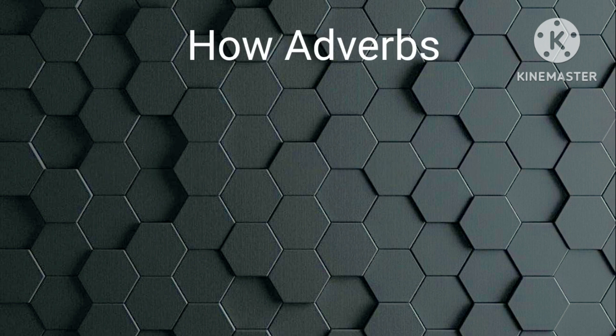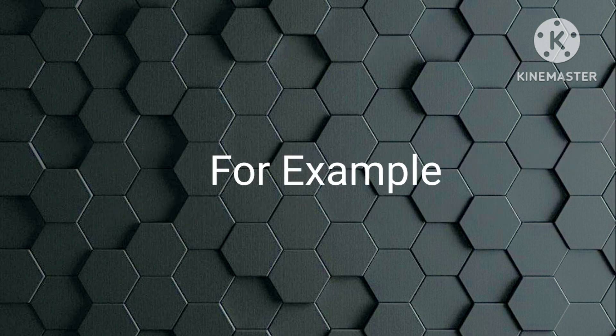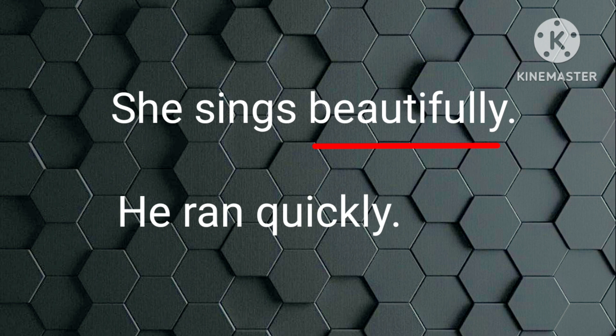How Adverbs: These adverbs describe how an action is performed. For example, 'She sings beautifully.' How does she sing? Beautifully. So 'beautifully' is the adverb here. 'He runs quickly.' How did he run? Quickly. So 'quickly' is the adverb here.